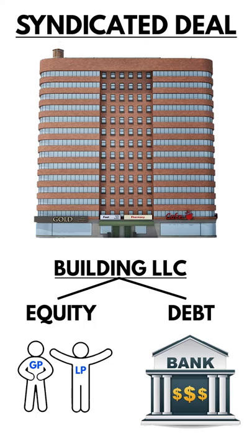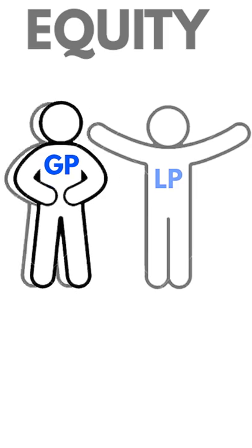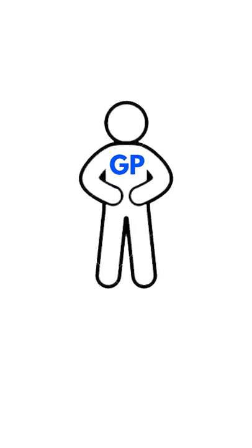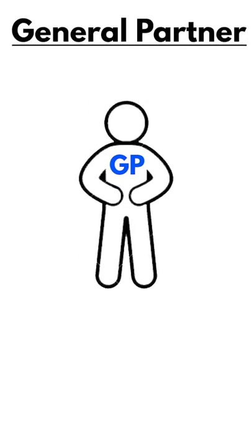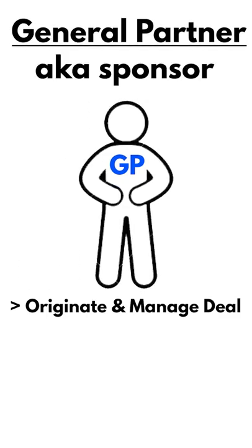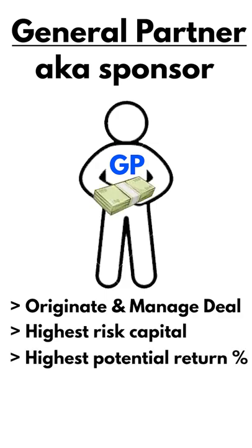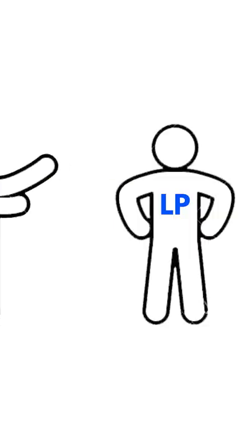In most syndicated private equity real estate deals, you have two distinct types of equity investors. The GP, or general partner, is also known as the sponsor. They originate and manage the deal and take on the most risk, but put in the least amount of money and can get the highest percentage returns if they hit their execution targets.